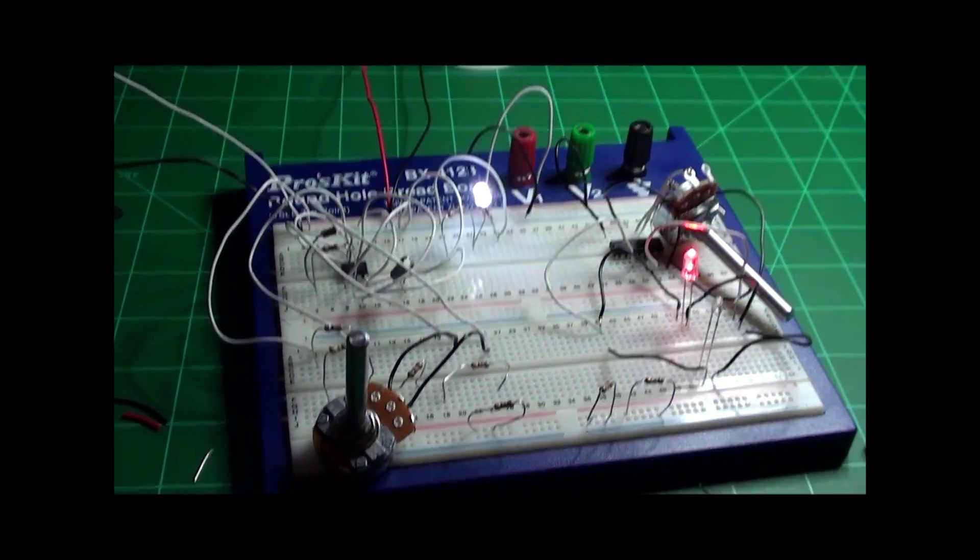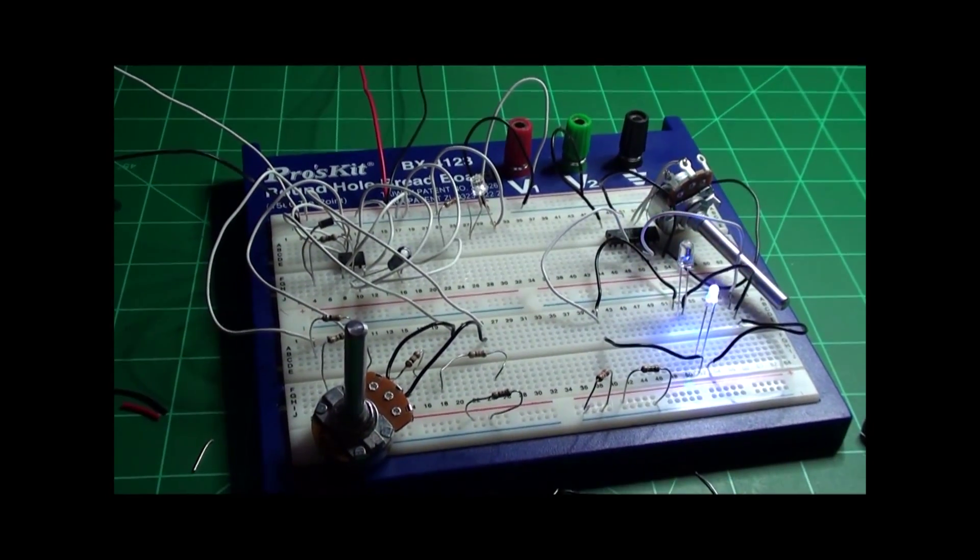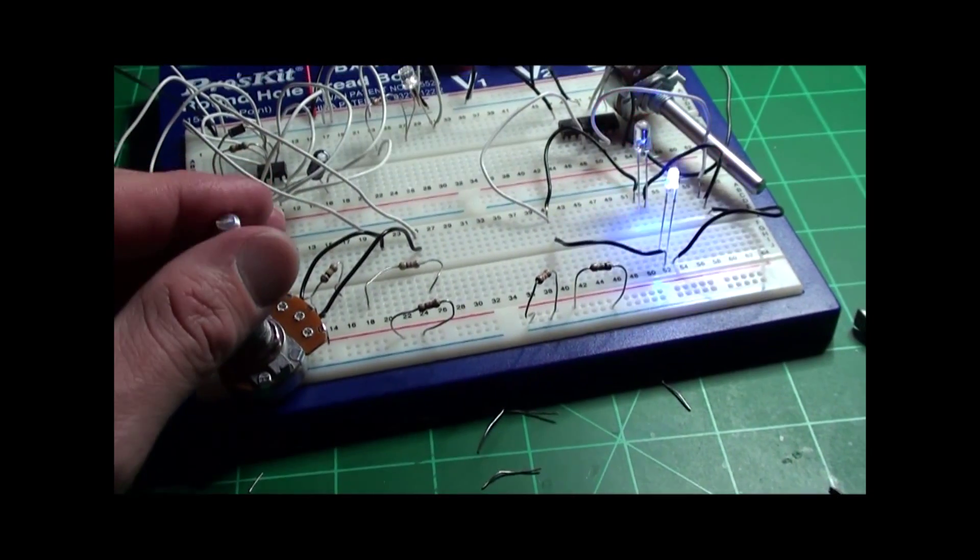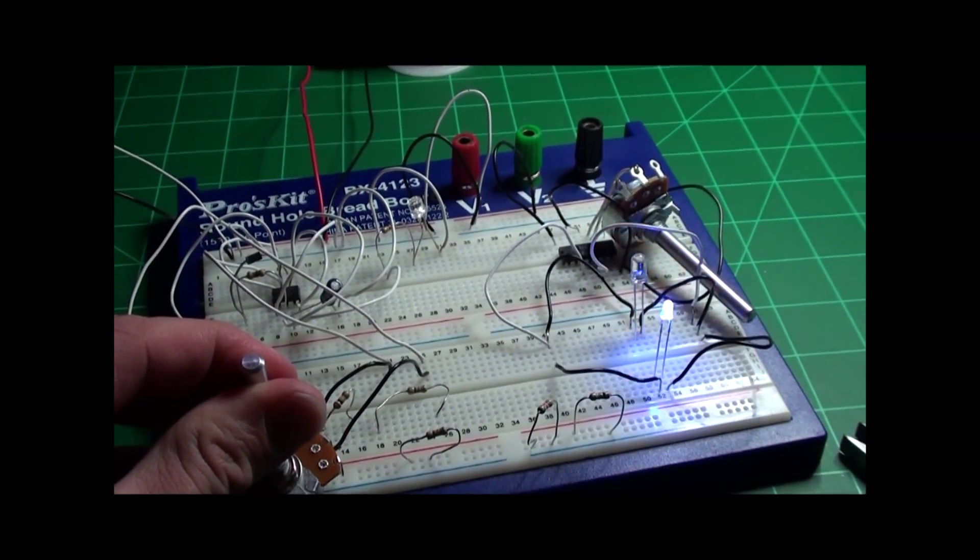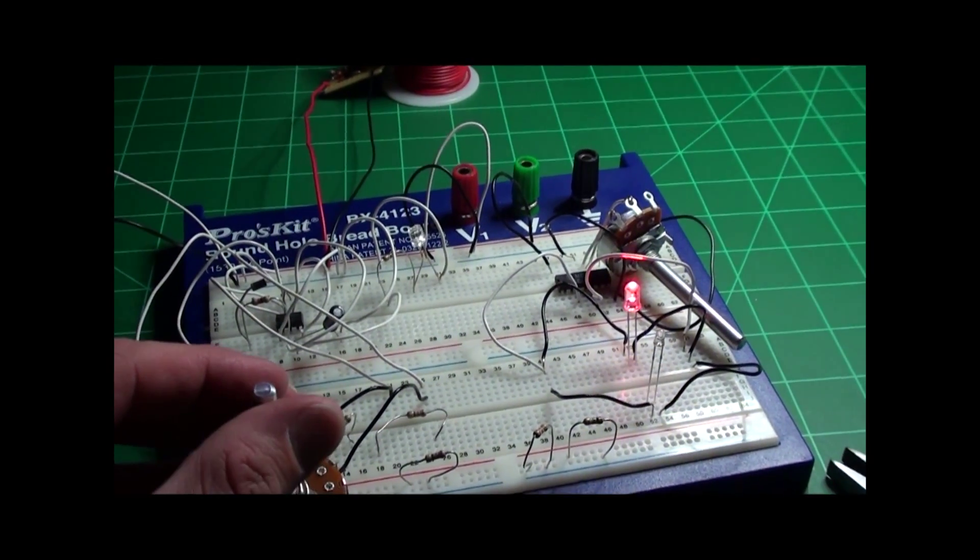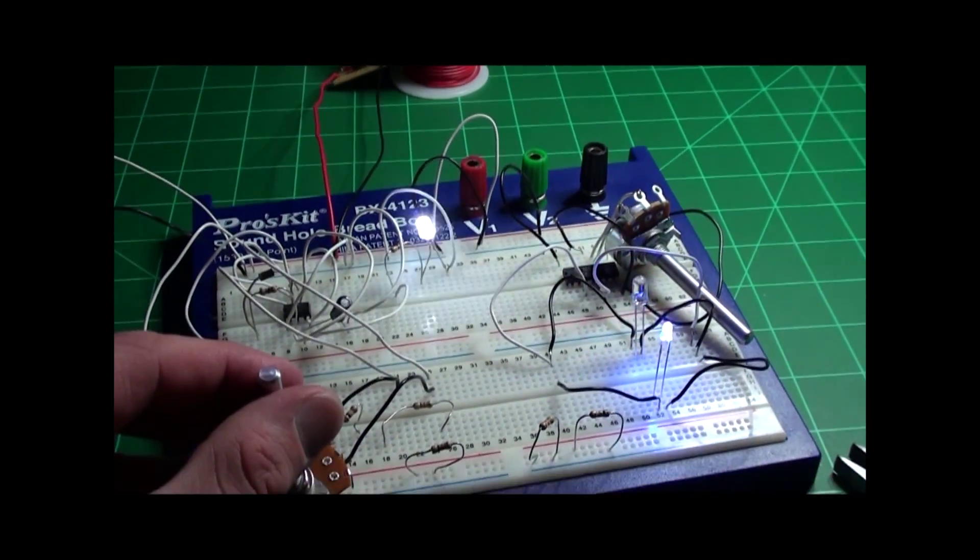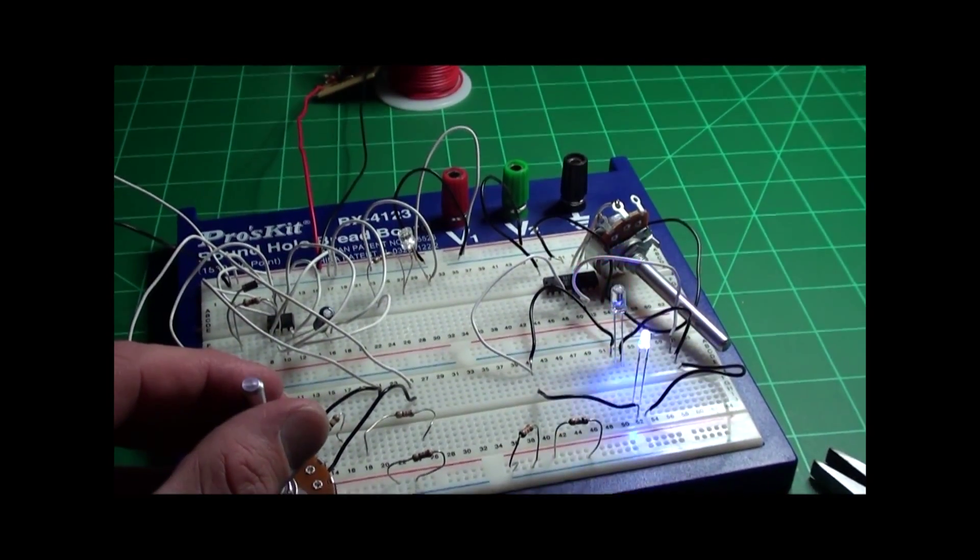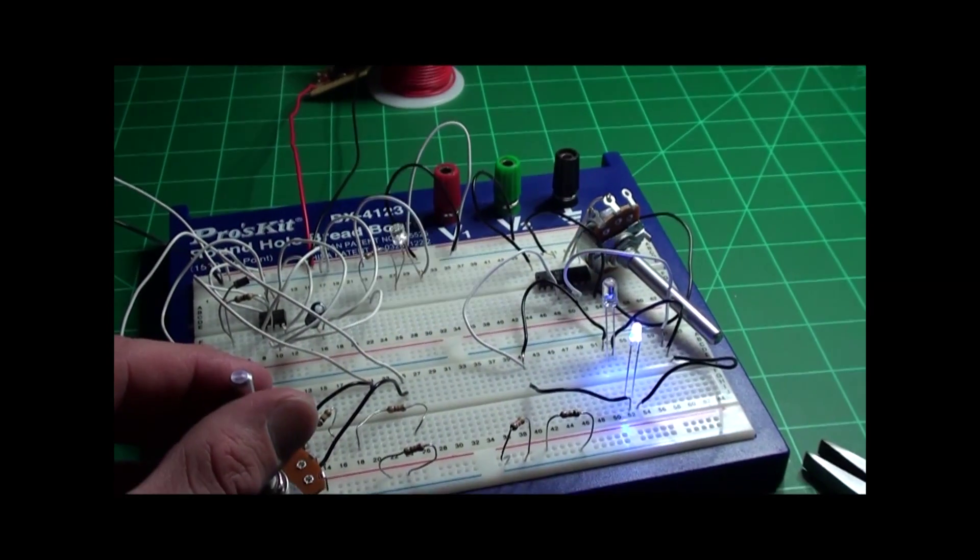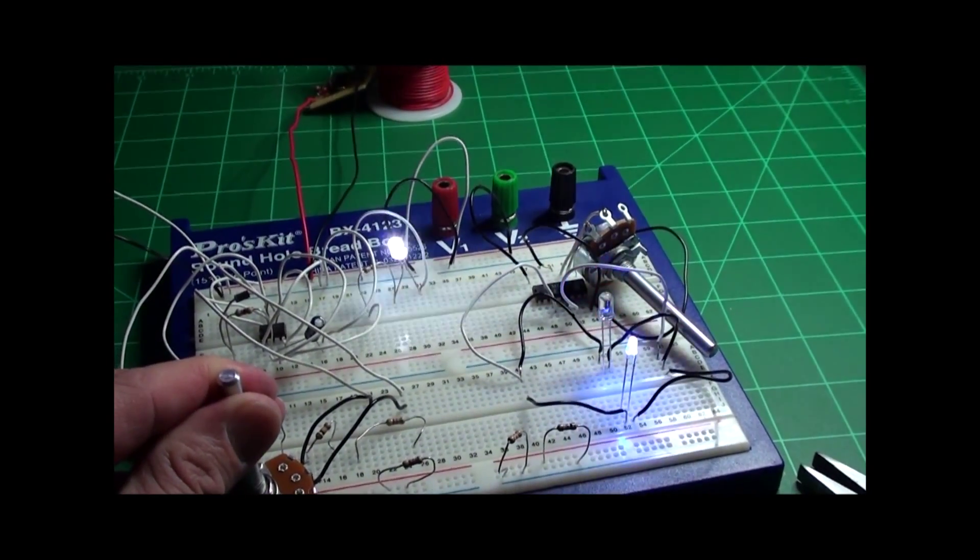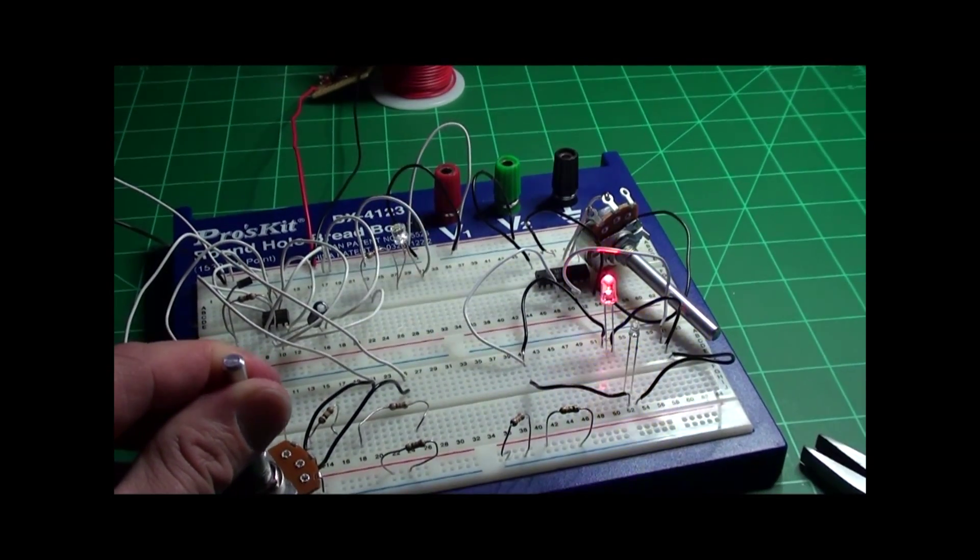Right here we have a pot and if I turn the pot you can see the blink times changing, the strobe time. By varying this resistance I can put a longer space between flashes. By varying it the other way I can make a shorter space between flashes until it's almost blinking.